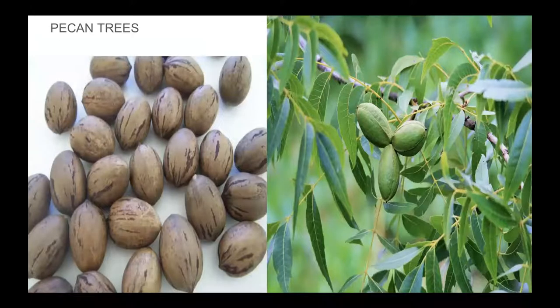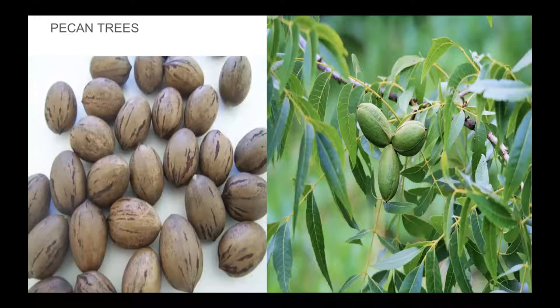Now, pecan trees — another one of my favorite seeds. The pecan tree is the state tree of Texas, and it comes from a seed called a pecan. On the left is what they look like when we buy them at the store. On the right you can see what they look like growing on the tree. A word of caution: you see this green husk on the outside of the pecan? Do not pick it off, because it will stain your fingers permanently — it doesn't wash off. Wait until the tree releases the pecans, then pick them up off the ground.